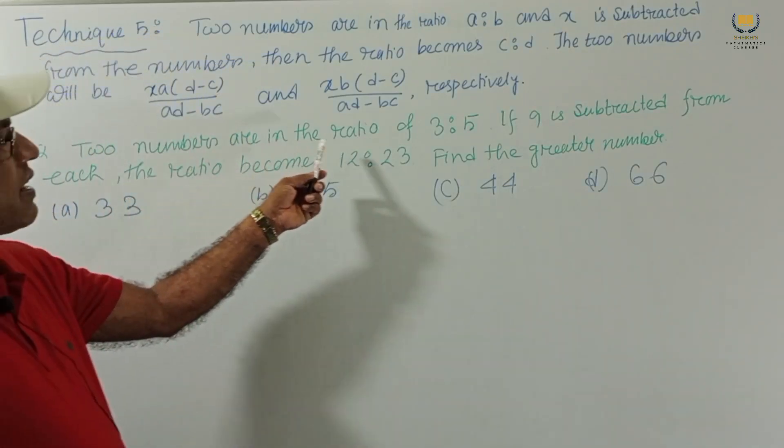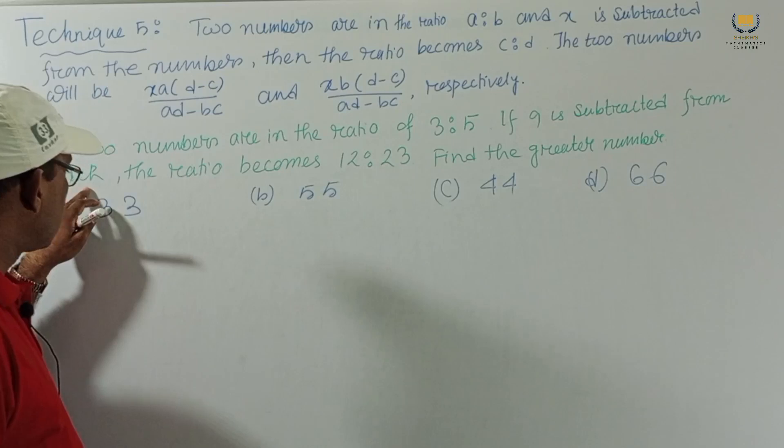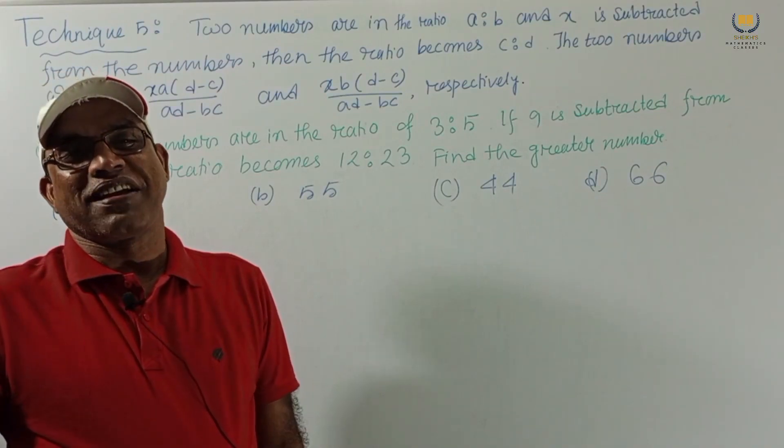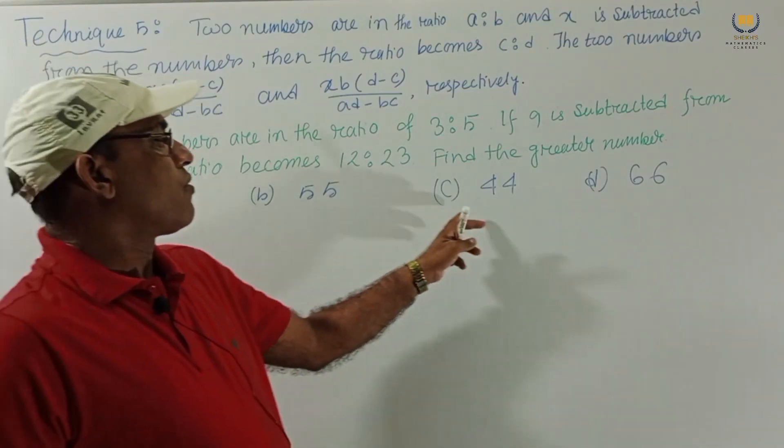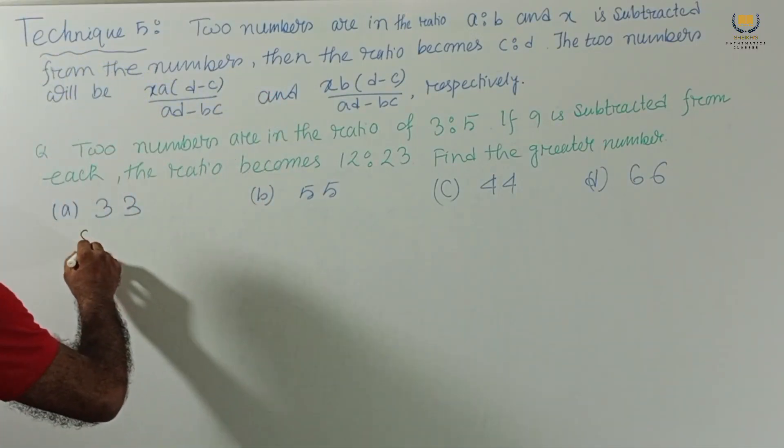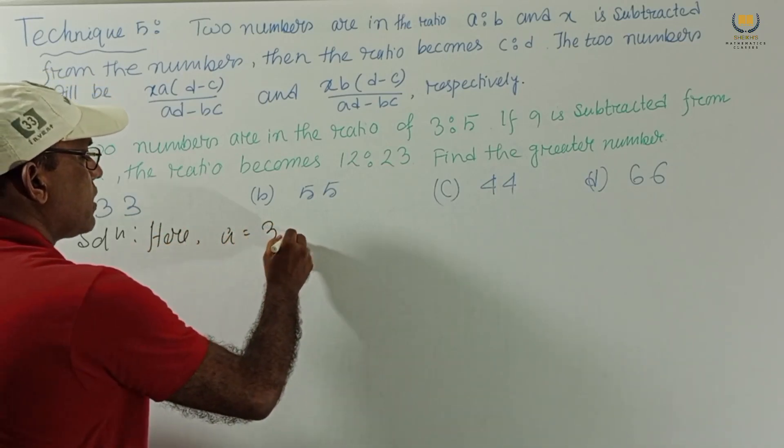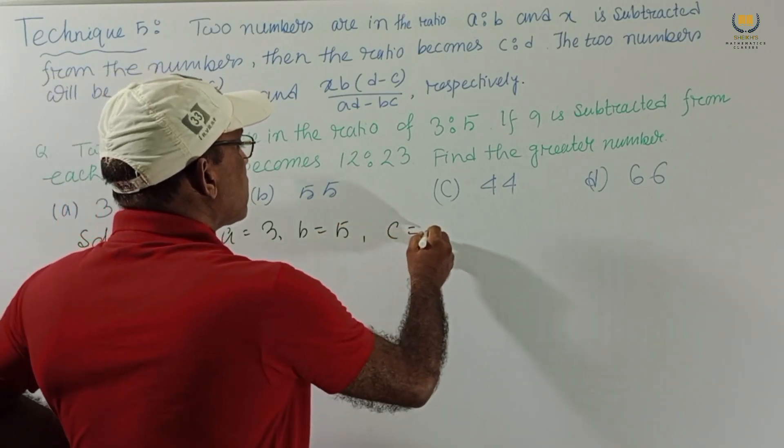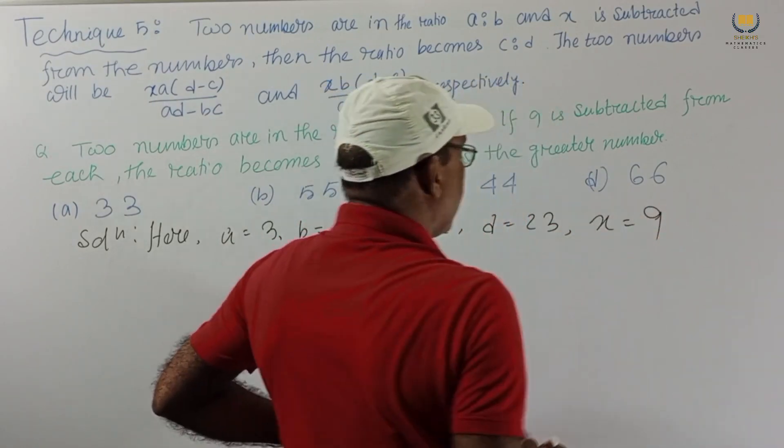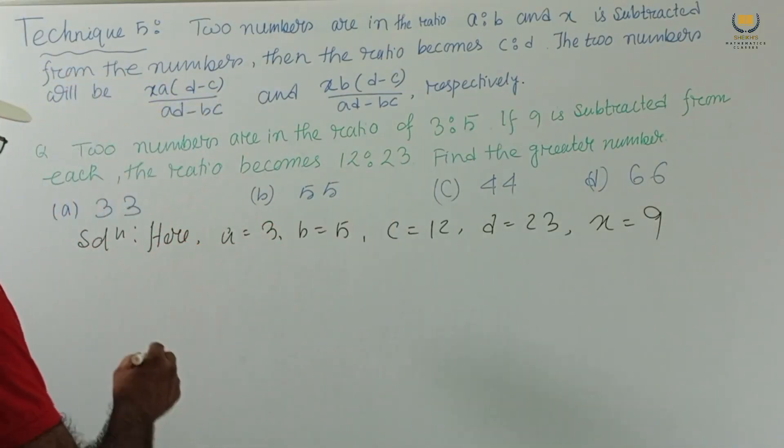Two numbers are in the ratio 3 is to 5. If 9 is subtracted from each the ratio becomes 12 is to 23. Find the greater number. The option given 33, 55, 44, 66. Which one is the greater number? Solution: here we have a equal to 3, b equal to 5, c equal to 12, d equal to 23, and x equal to 9.